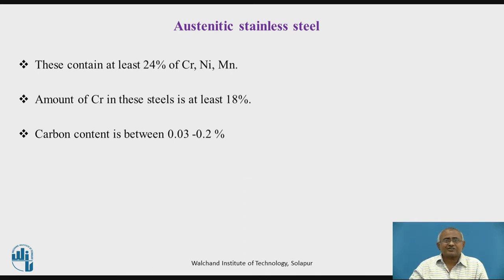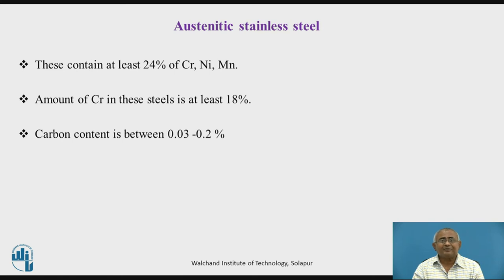In general, austenitic stainless steels are superior in all respects to ferritic stainless steels. We will try to learn how they are superior and in what respect they are superior within the next few minutes.